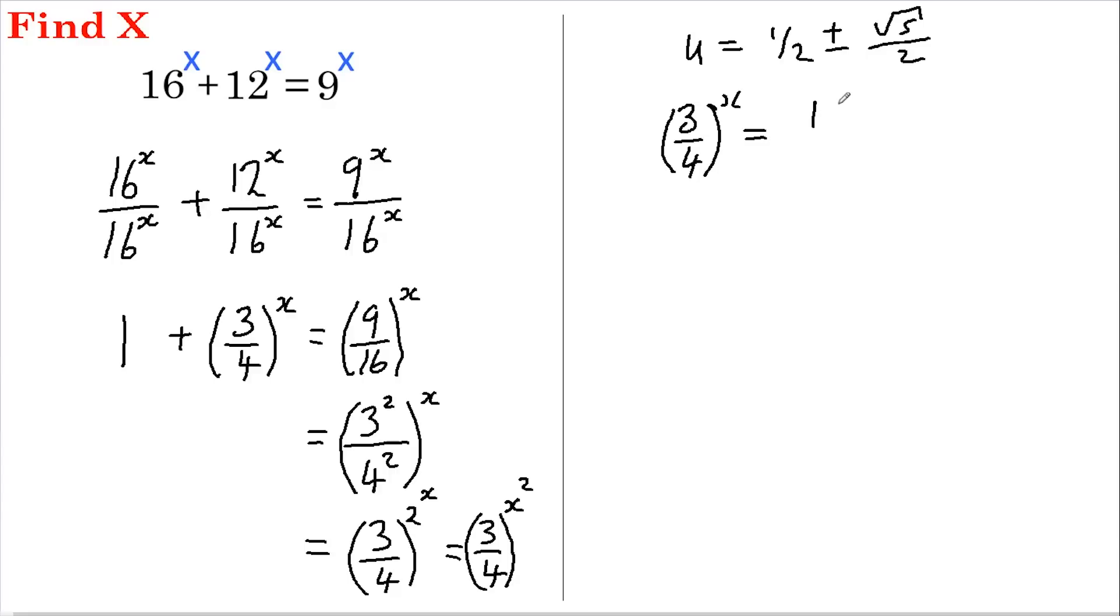Now to deal with this power of x we simply take the log of both sides. So this becomes log of 3 quarters and the x I'm going to bring down in front, and this equals the log of 1 plus or minus root 5 over 2.